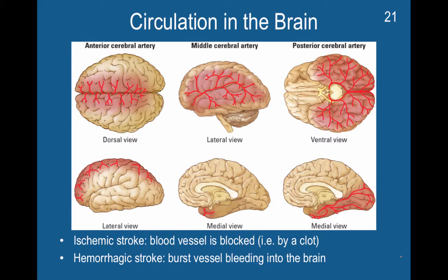There are a couple of primary blood vessels that supply oxygen and nutrients to the brain. There are three main arteries: the anterior cerebral artery, the middle cerebral artery, and the posterior cerebral artery. The anterior cerebral artery primarily supplies blood flow to the anterior portion of the brain.